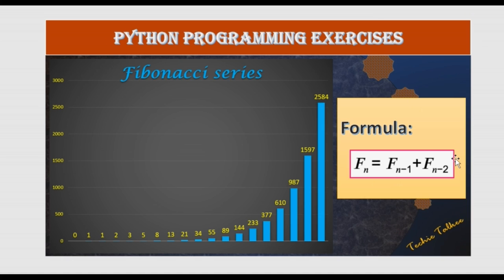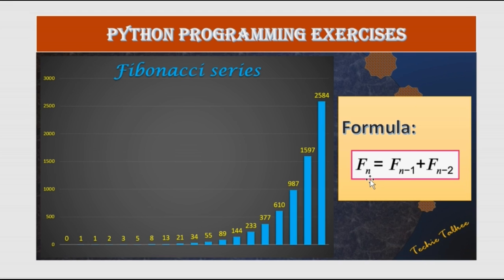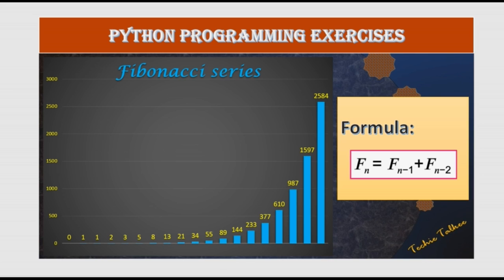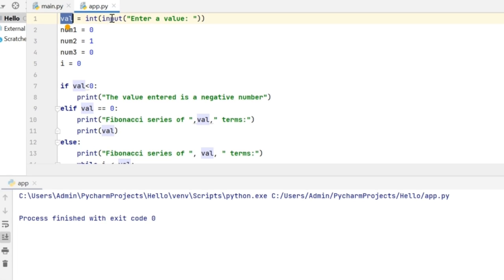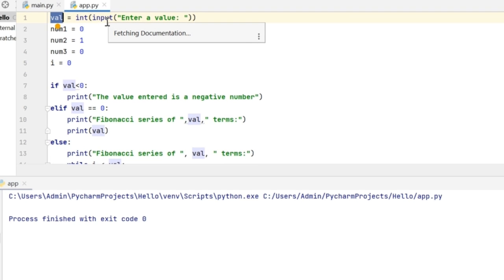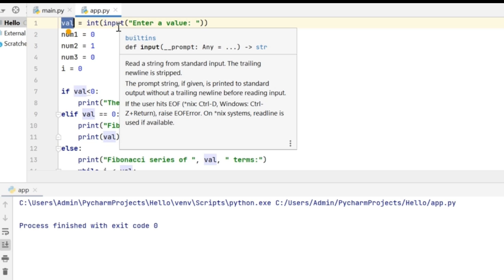Now, this is the formula to get the Fibonacci value: the nth value will be the sum of n-1 and n-2. Let me show you how to write a Python program to implement this logic. Here in this program, first I am getting the user input which I am going to store in the variable val. This input is going to tell me till what term the Fibonacci series has to be generated.